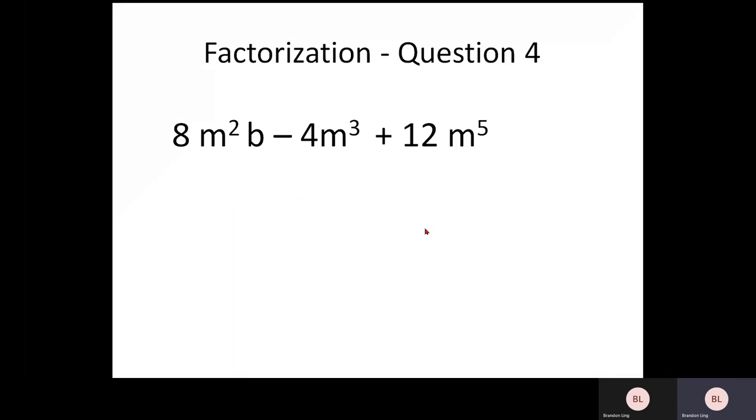We move on to question number four. Here you have 8M squared B minus 4M cubed plus 12M to the power of 5. Here you have two terms which you can actually pull out. The first term will be 4 from all these numbers. And the second term that you can actually pull out is M to the power of square.